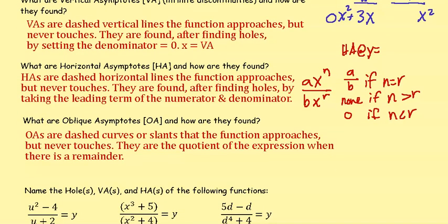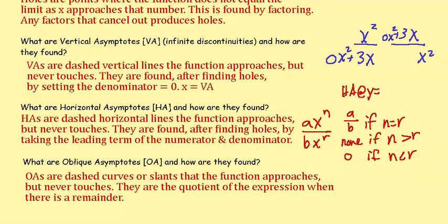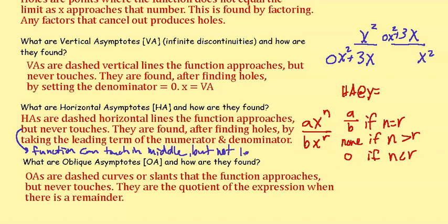What are oblique asymptotes (O-A) and how are they found? O-A's are dashed curves or slants that the function approaches but never touches. They are the quotient of the expression when there is a remainder. Note that horizontal asymptotes can actually be touched in the middle — they are basically talking about the end behavior.